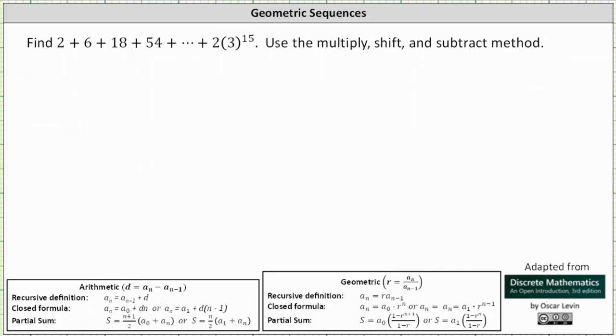We're asked to find the sum 2 plus 6 plus 18 plus 54 plus dot dot dot plus 2 times 3 to the power of 15. We're asked to use the multiply, shift, and subtract method.